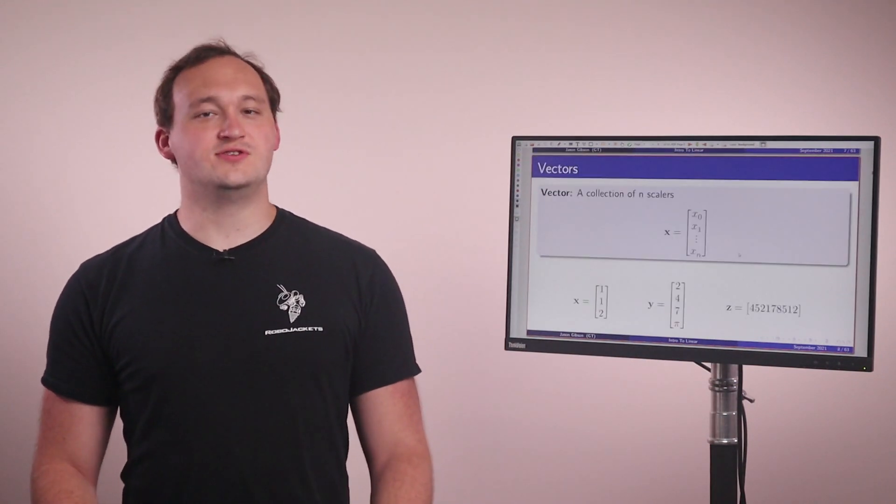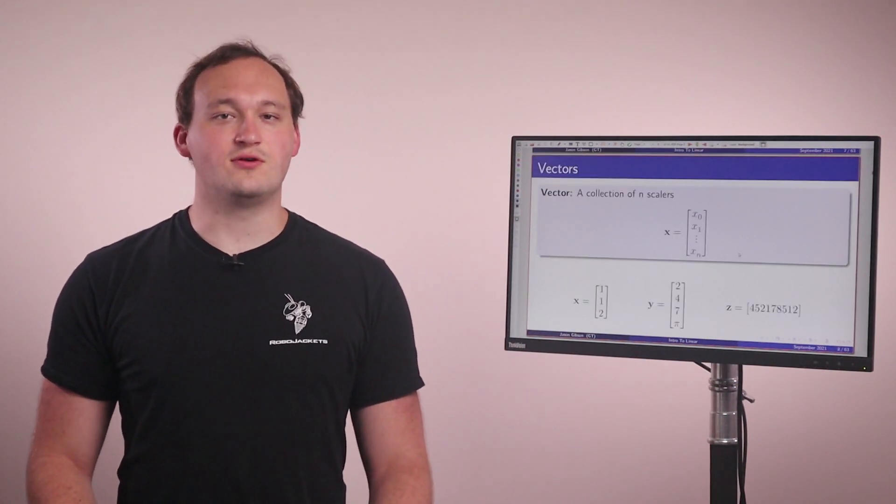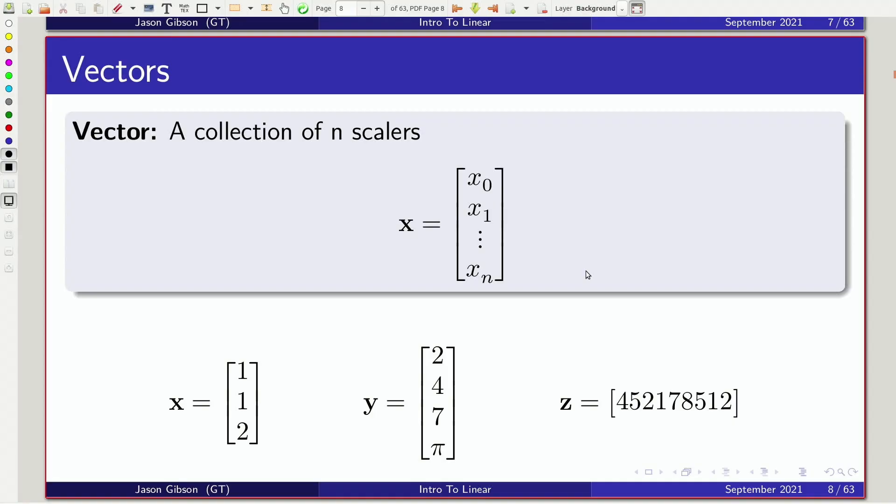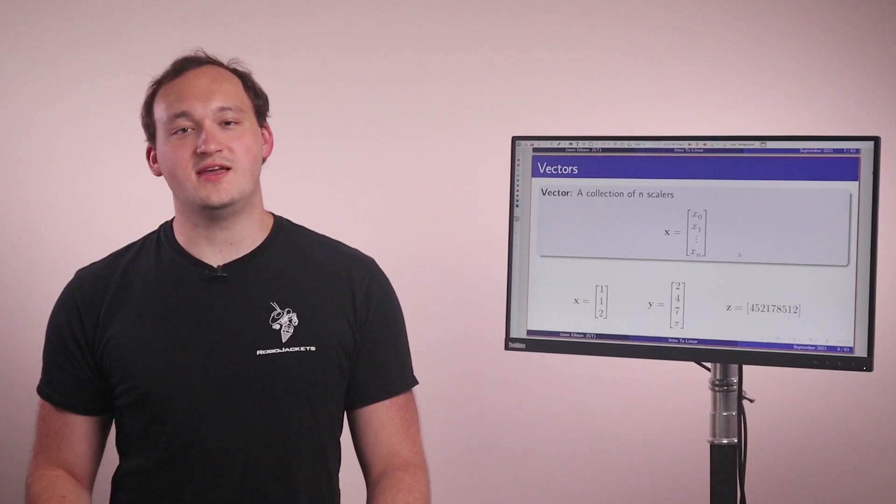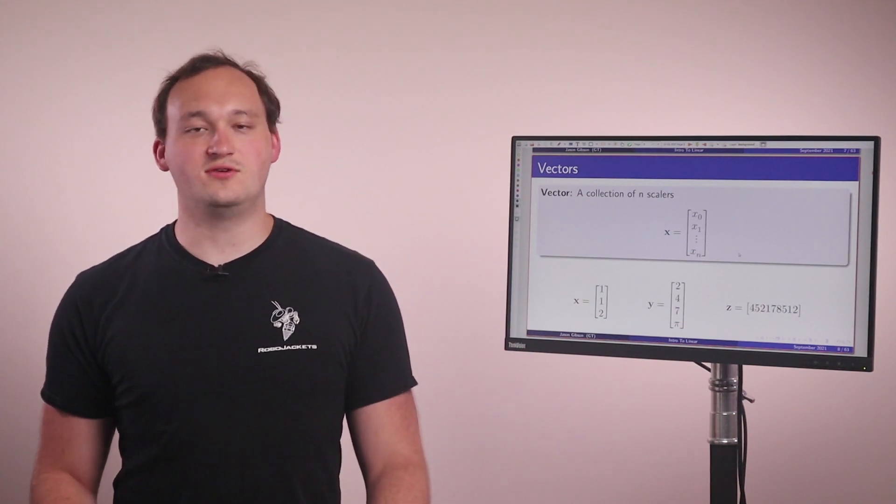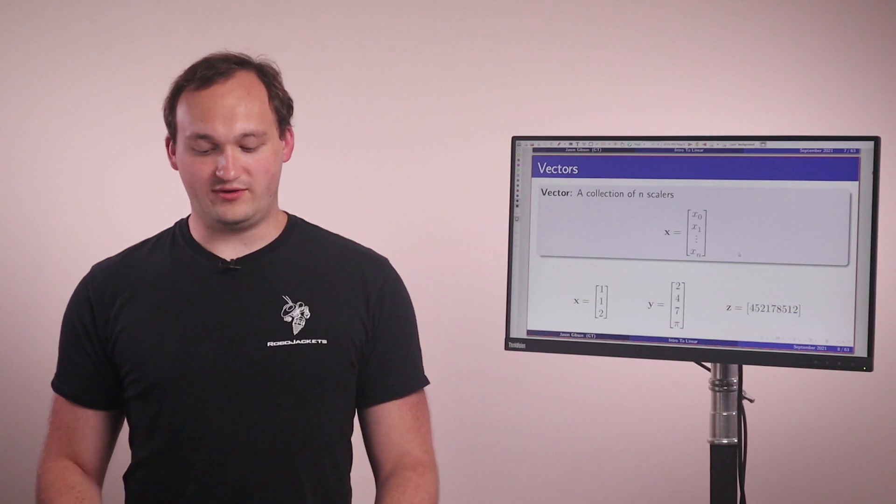So the first time we're going to learn something new is with a vector. A vector is just a collection of n scalars, and we put them essentially in a column like you see here. So each vector will have a certain number of scalars, and this is called the dimensionality. So right now we have, at the top we have a vector that has n scalars, n possible values, at the bottom we have ones with three or four or whatever other number you need.